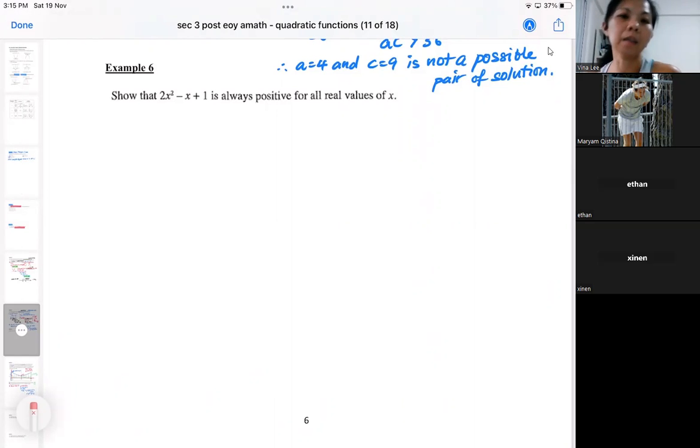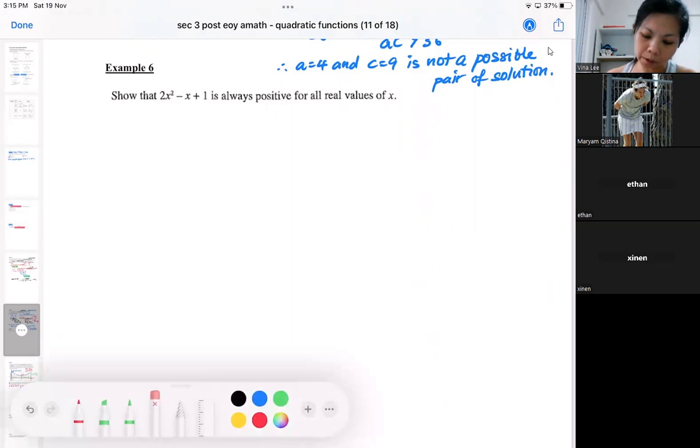We also have the idea of discriminant because it is a quadratic function. So I'm going to do it by the complete square method first.